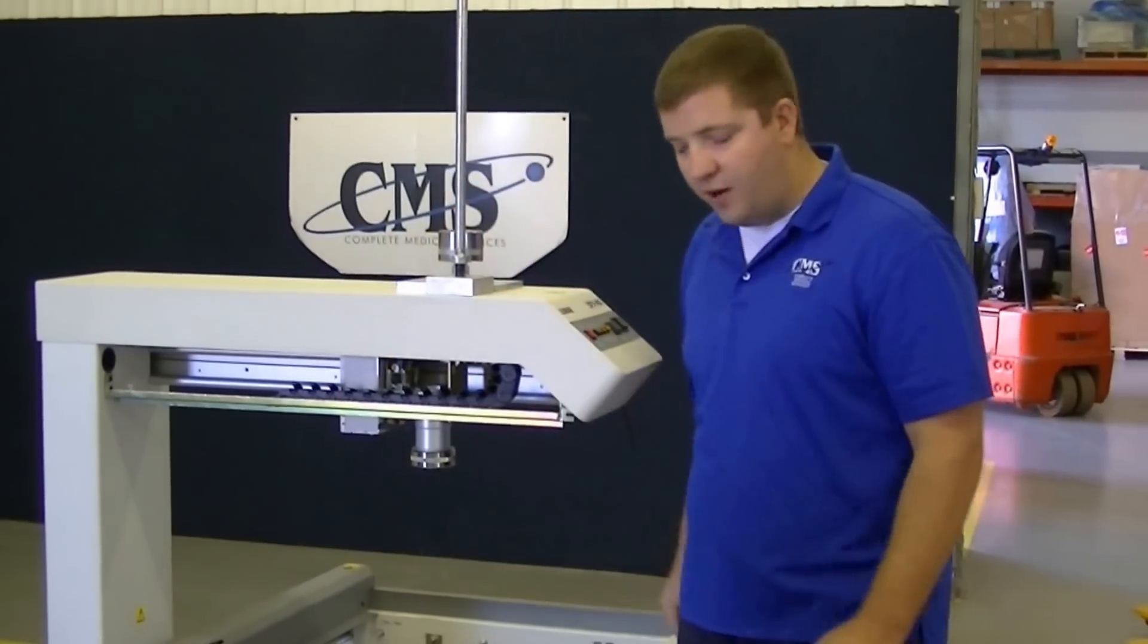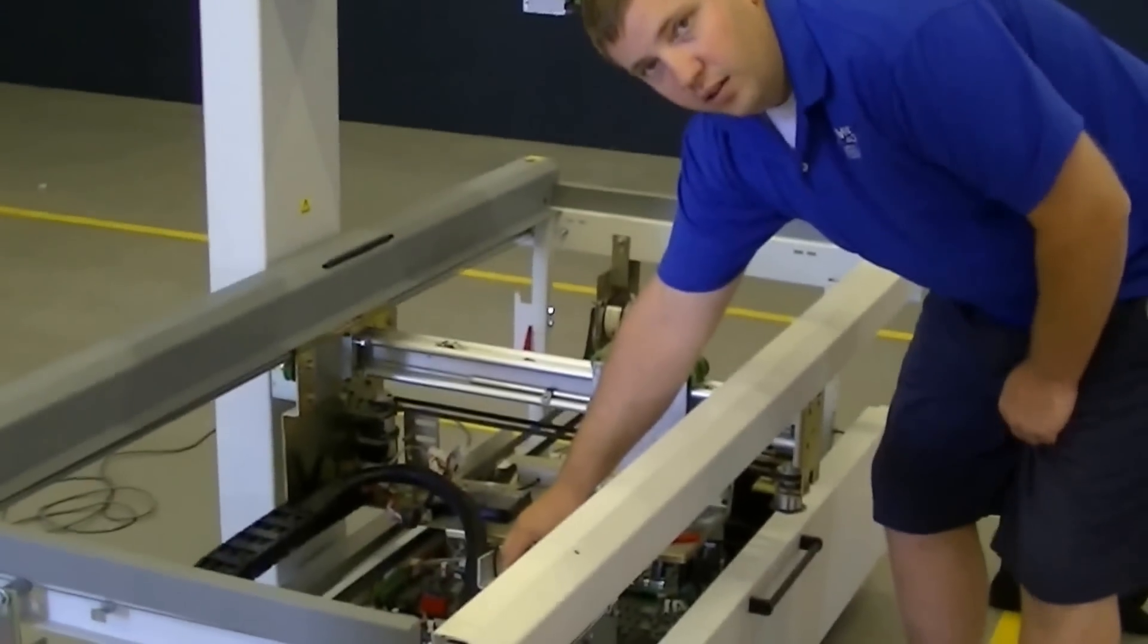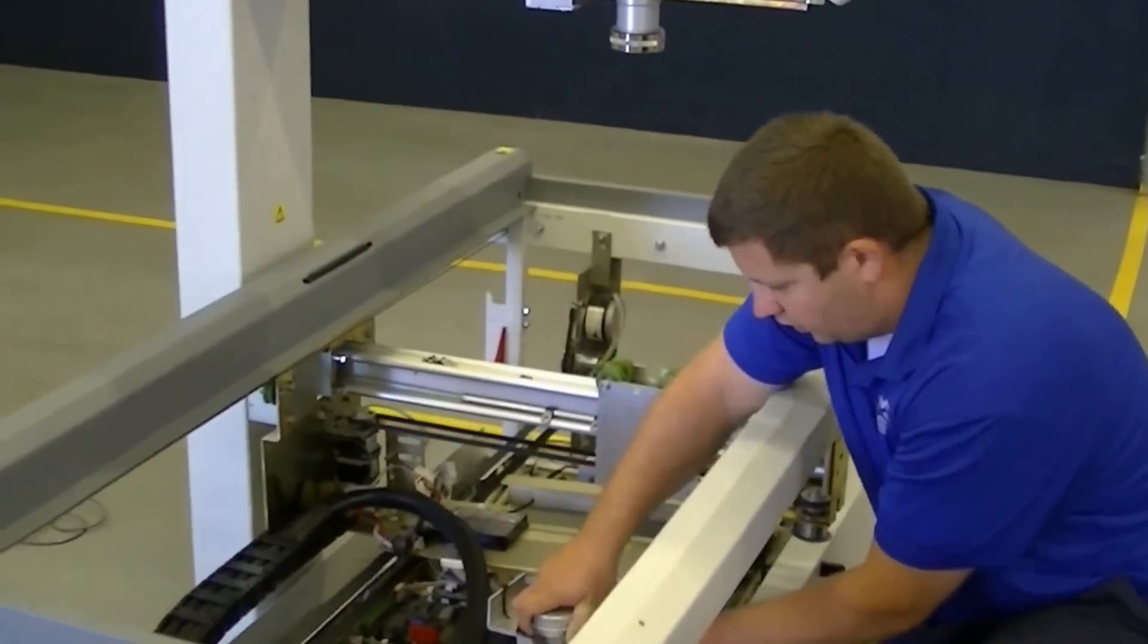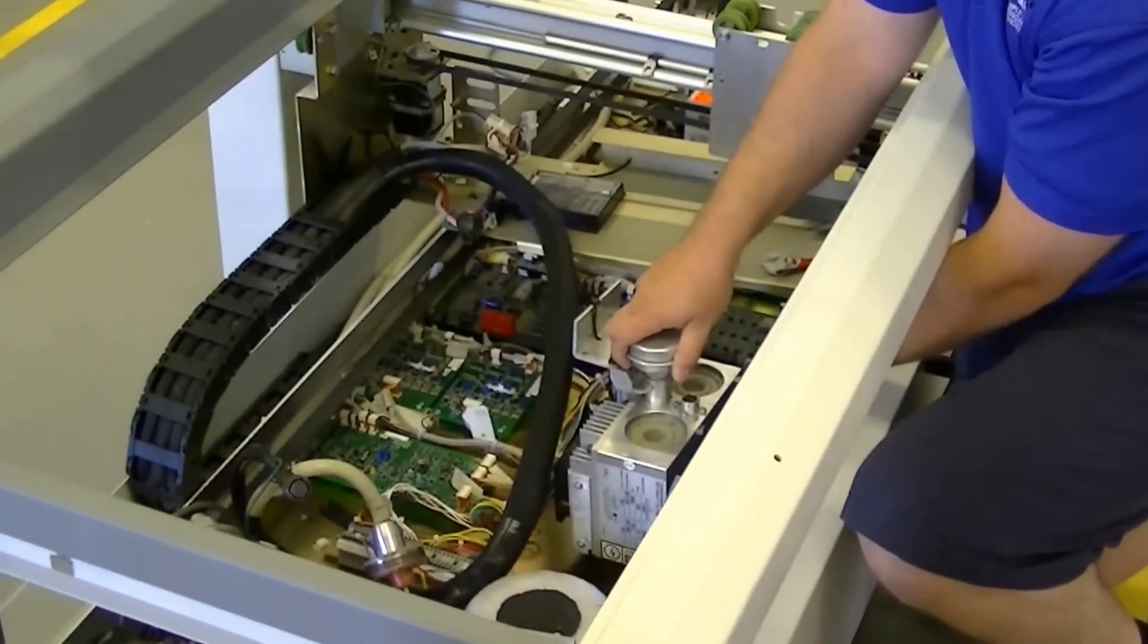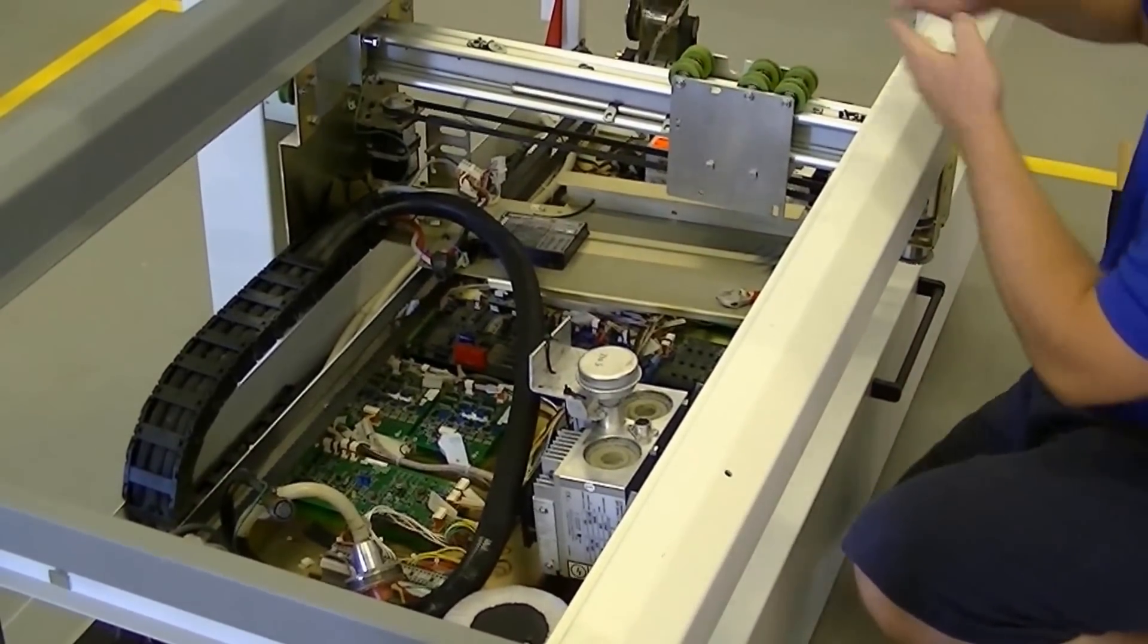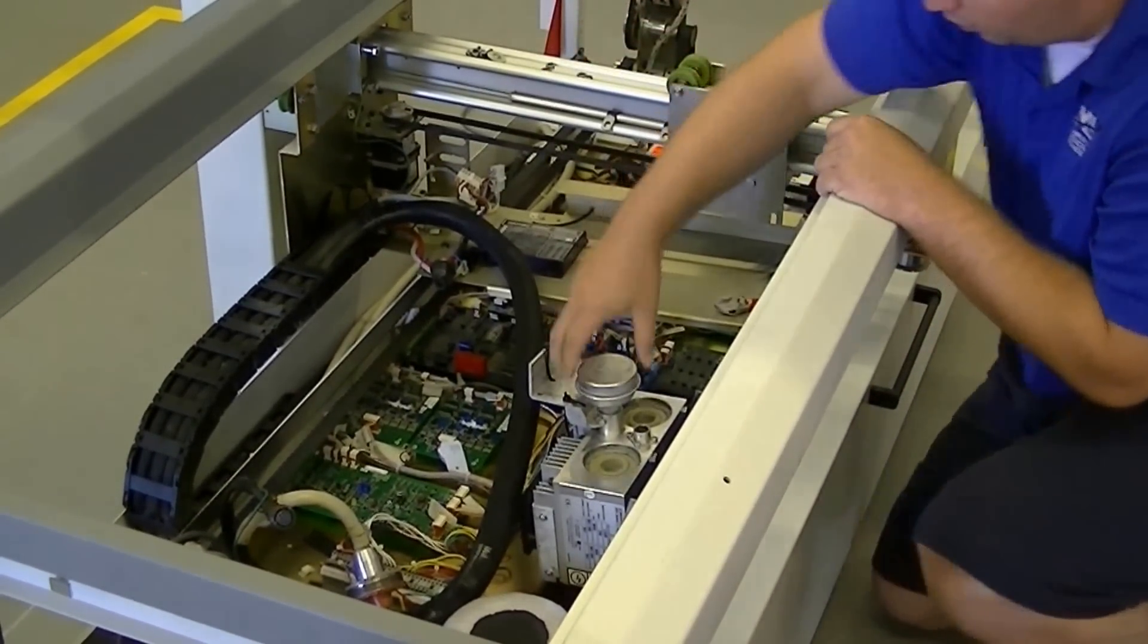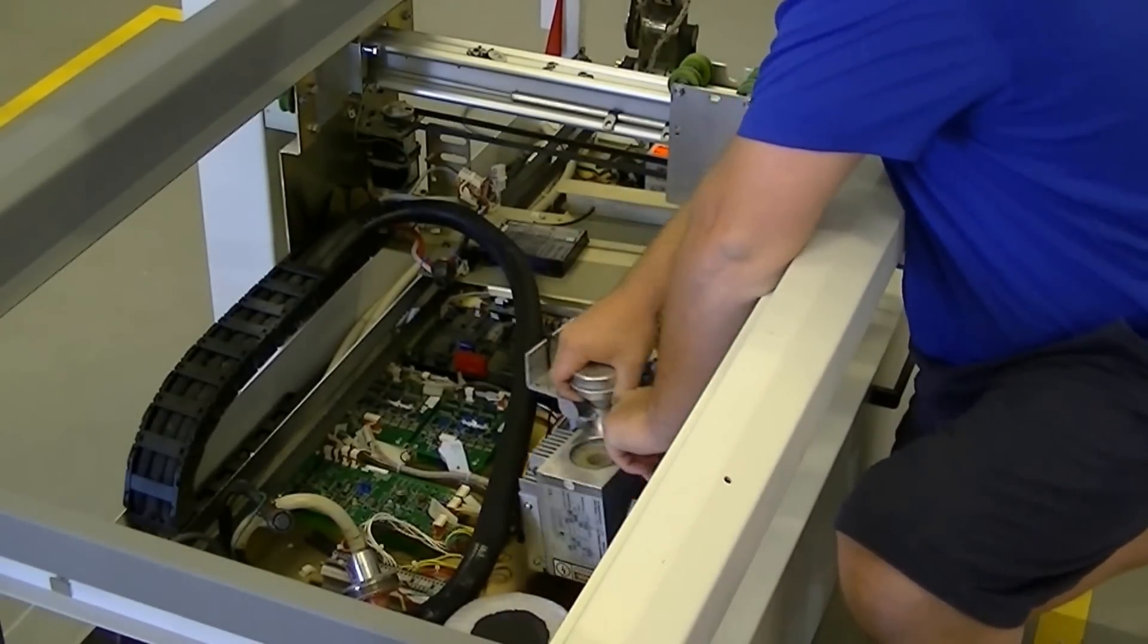So first things first, we'll start off by undoing the bracket that the tube is held in. When you first get the system, the tube is mounted on this bracket. You want to pull the bolts off, set them up here, and then you're going to want to flip the tube once you pull it out of the bracket.